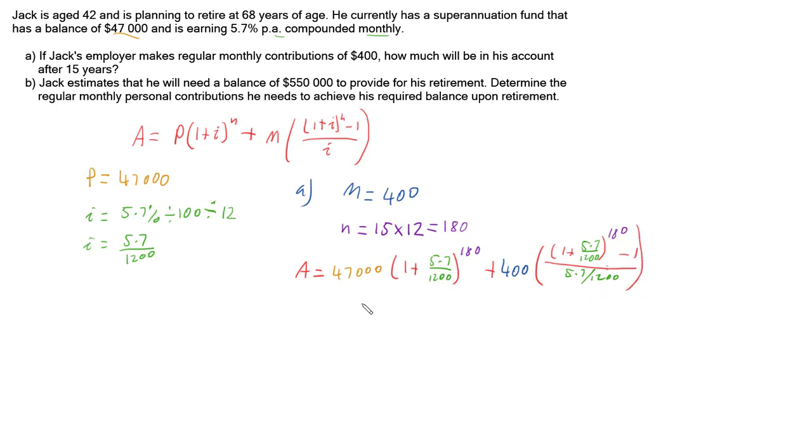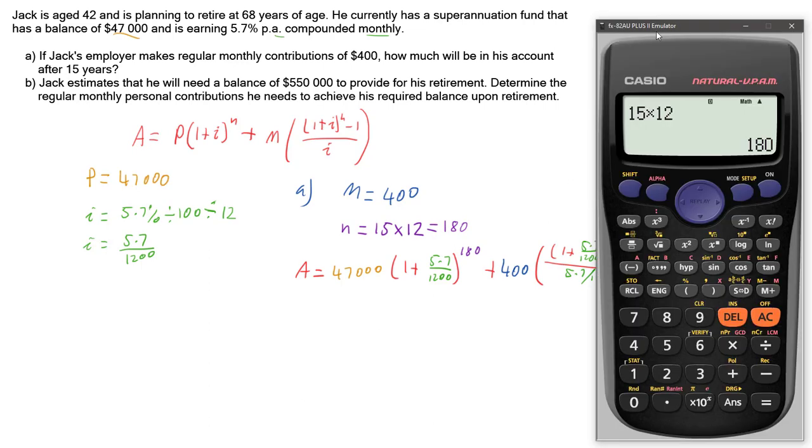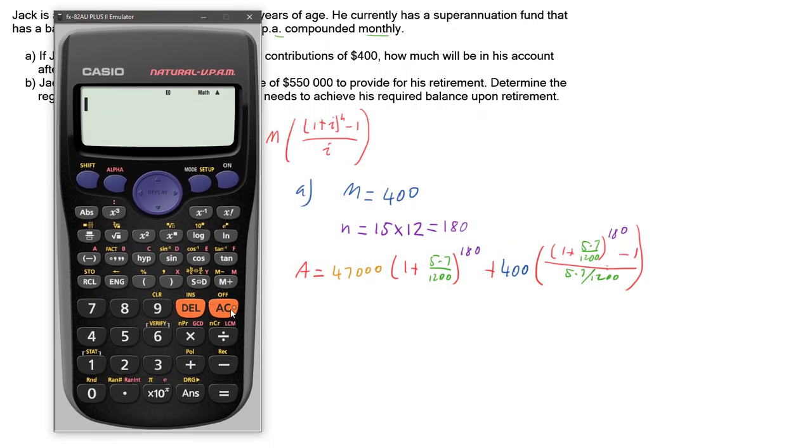So if we go and put that into a calculator, we can actually get our answer. So we've got 47,000 times (1 plus 5.7 over 1200) to the power of 180, plus our 400 outside of fraction (1 plus 5.7 over 1200) to the power of 180, minus 1, over 5.7 over 1200.